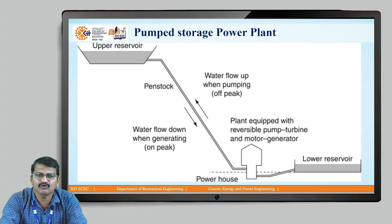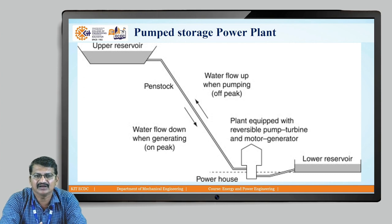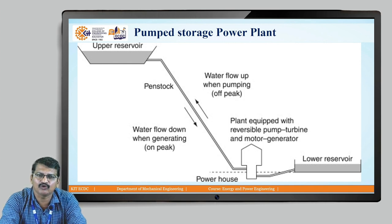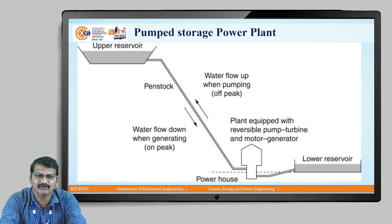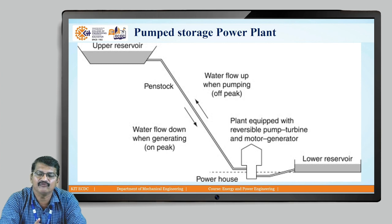When peak load is required — what is peak load and base load? Take the example of any city: in the morning, a very high quantity of energy is required, and in the evening, a very high quantity is required. In the middle time, say 11 am to 5 pm, very less power is required. If total power required is about 50 megawatts in the morning but only 20 megawatts in the middle, we still have to install a 50 megawatt capacity power plant to meet peak demand.